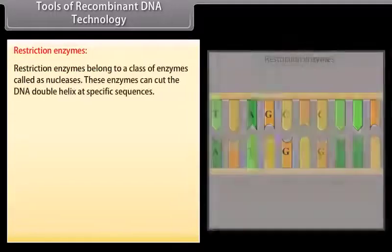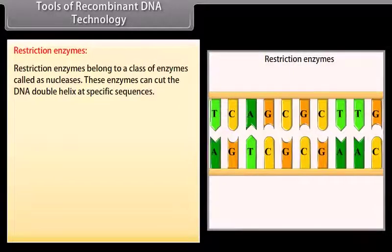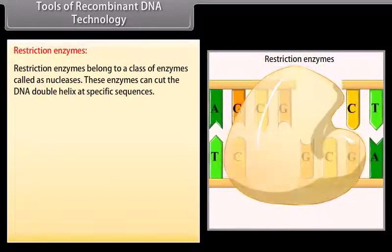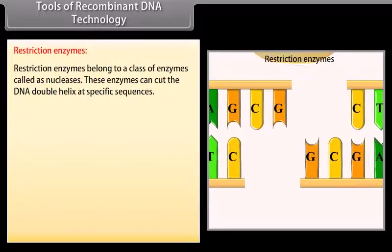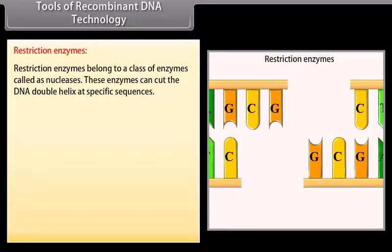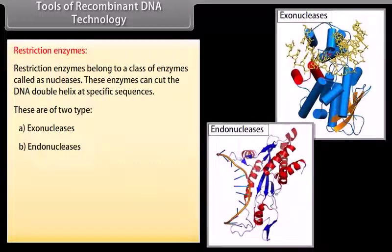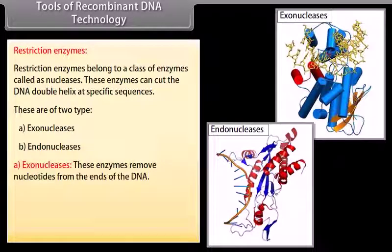Tools of recombinant DNA technology: restriction enzymes. Restriction enzymes belong to a class of enzymes called nucleases. These enzymes can cut the DNA double helix at specific sequences. They are of two types: exonucleases and endonucleases. Exonucleases remove nucleotides from the ends of the DNA.